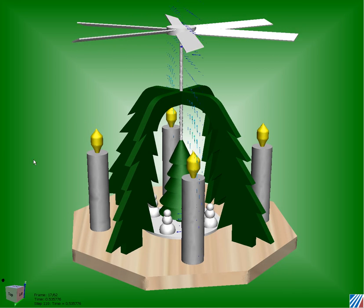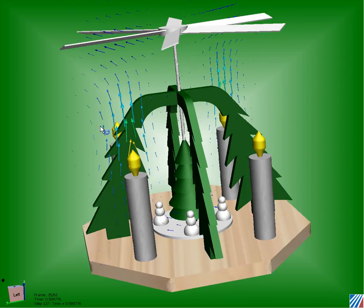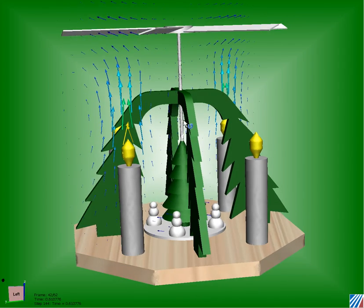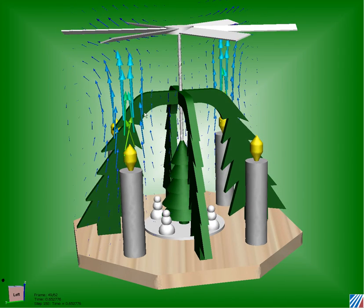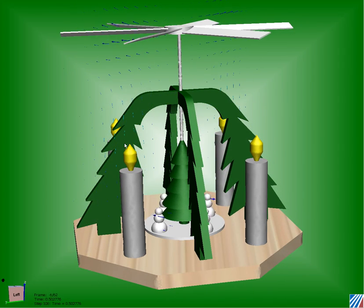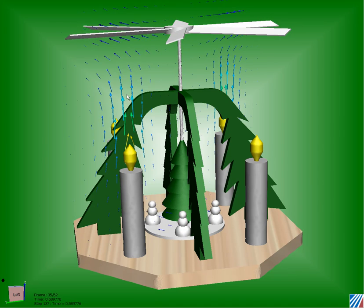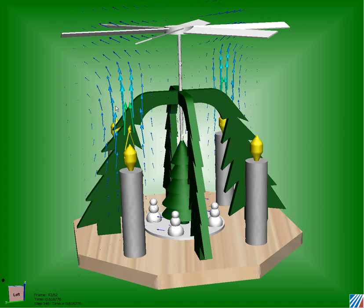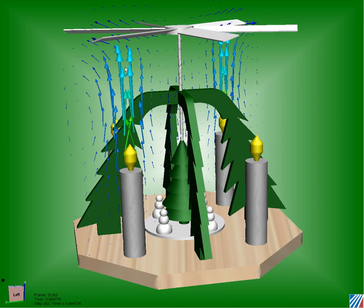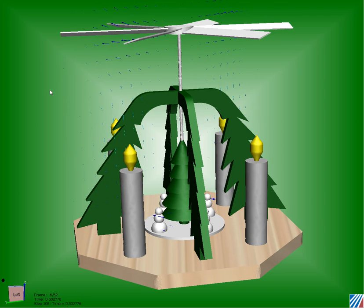One of the things we can do is drop in a section or cut plane and understand how the velocities are coming off the tips of those candles. These vectors are increasing in size and length, indicating speed up off those tips.